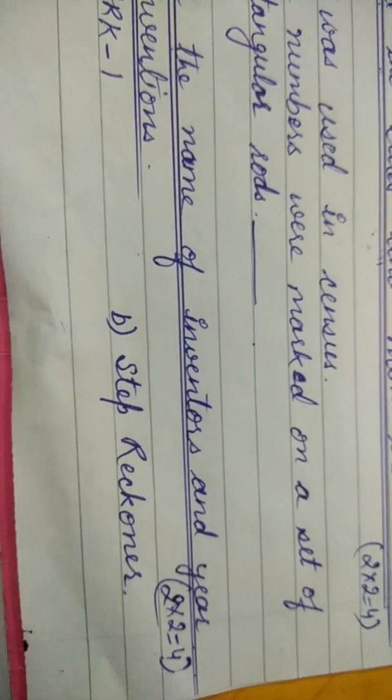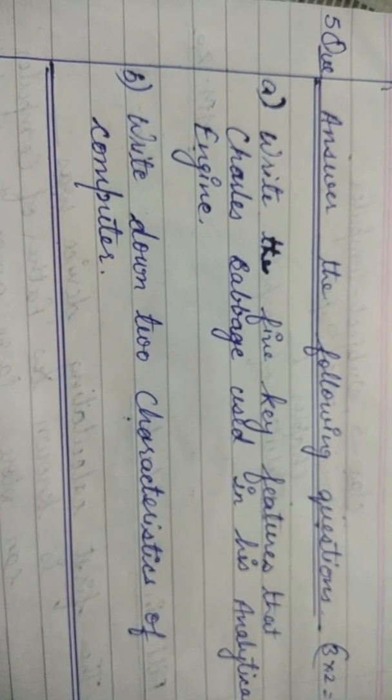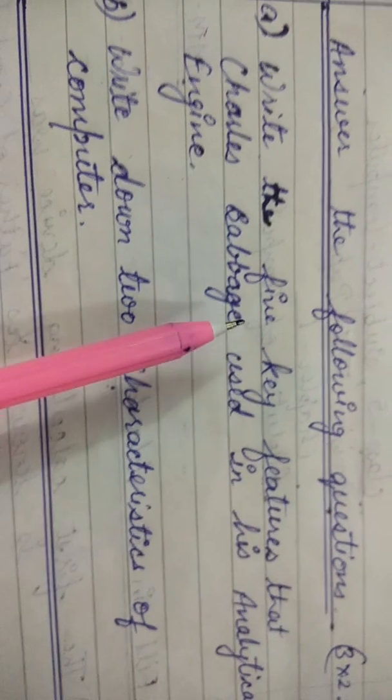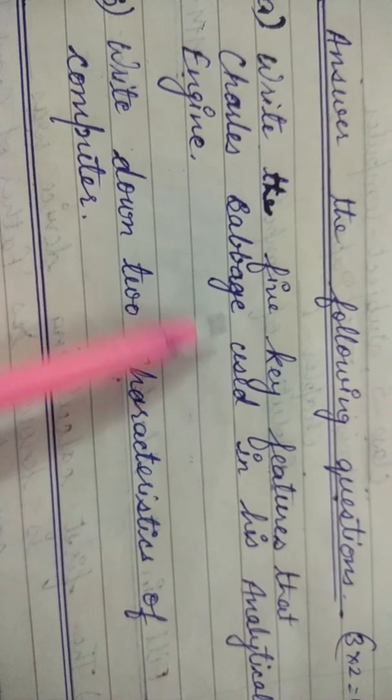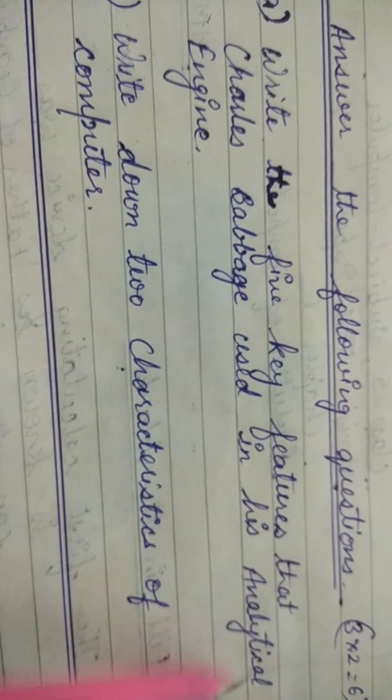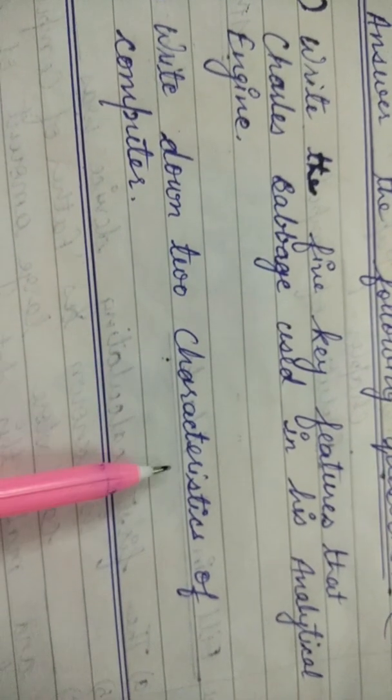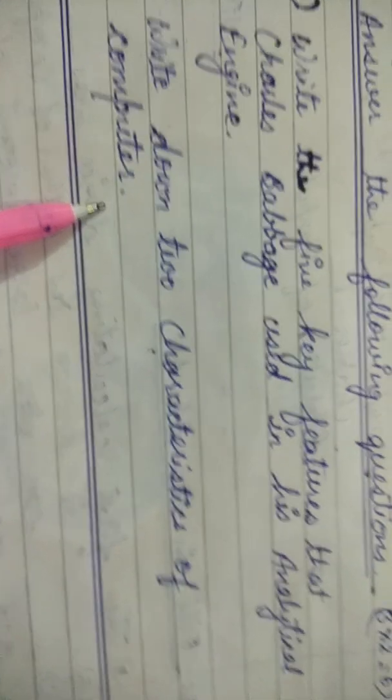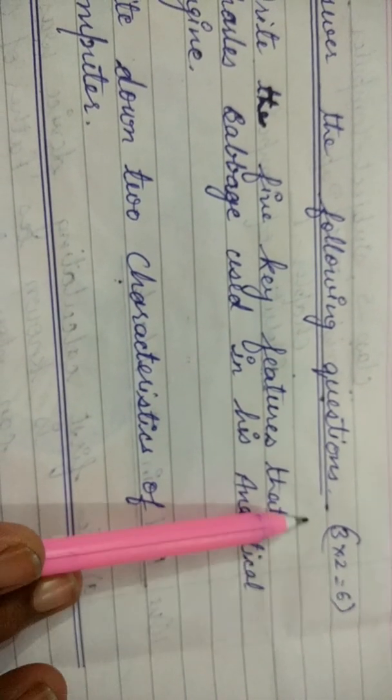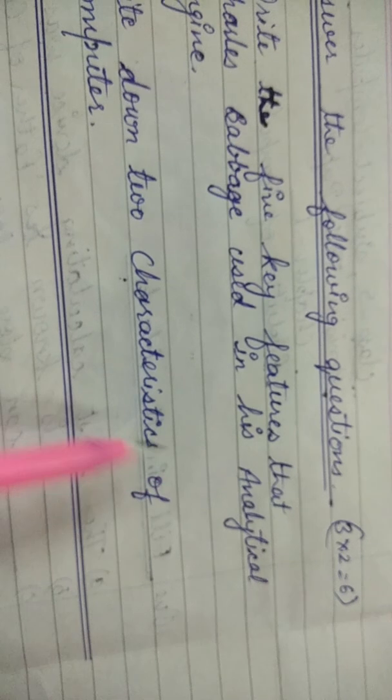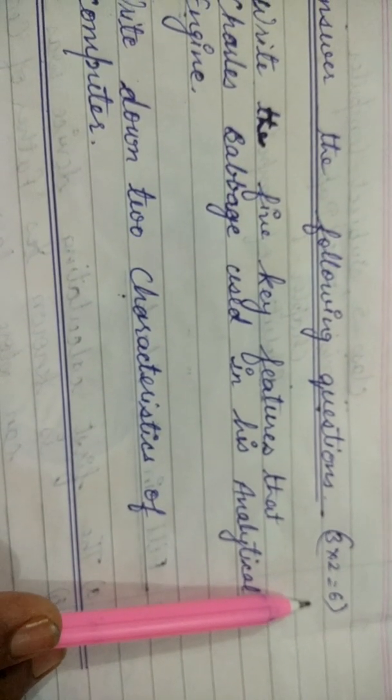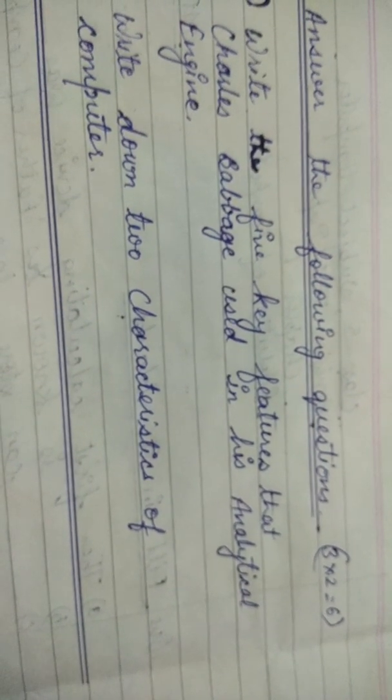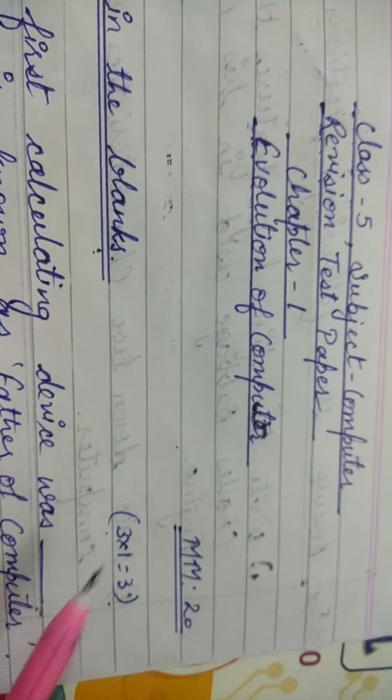Now question number five: Answer the following questions. Number one: Write the five key features that Charles Babbage used in his analytical engine. Number two: Write down two characteristics of computer. Each question carries three marks and there are two questions, for a total of six marks. This revision test carries a total of 20 marks.